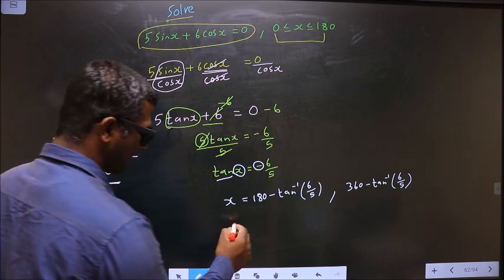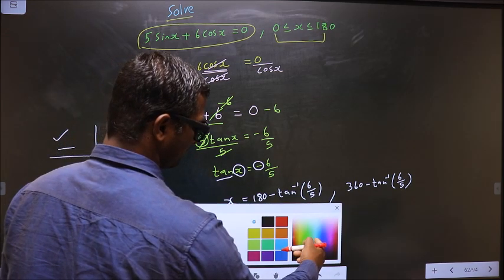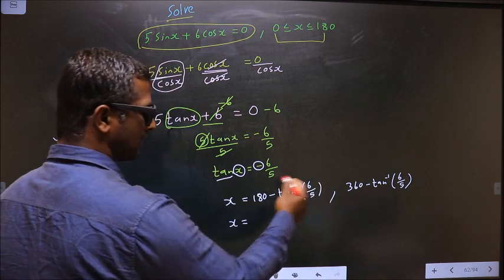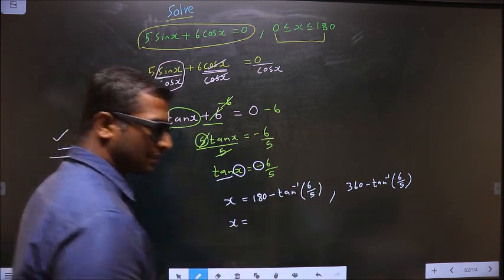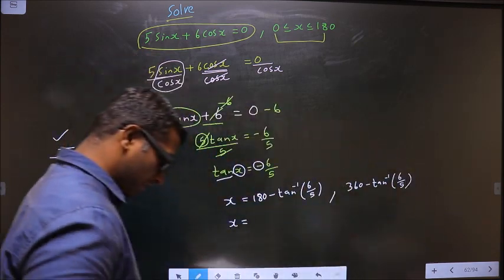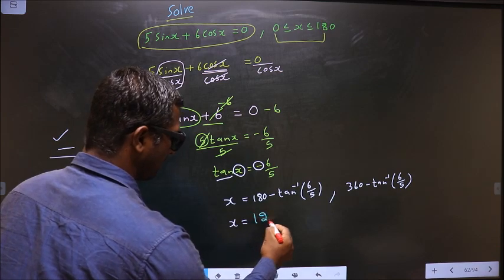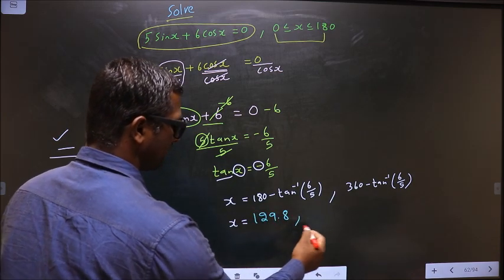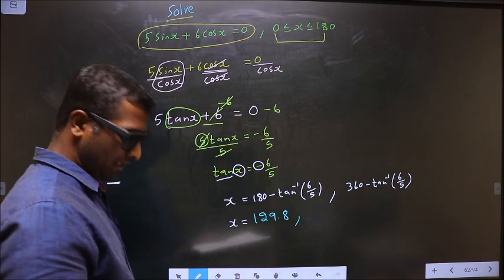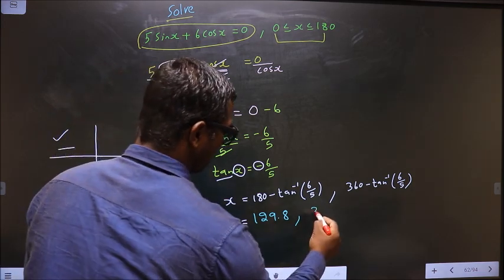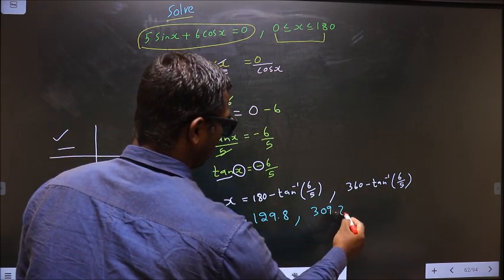Now x equal to: put this in the calculator, you get 129.8. Put this in the calculator, you get 309.8.